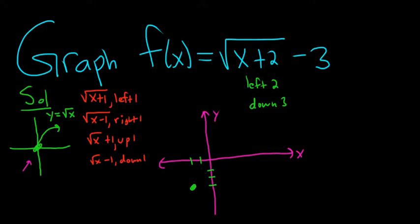We're going to cross the x and y-axis, so we should find the x and y-intercepts. Let's do the y-intercept first. To find the y-intercept, you always plug in 0 for x. So f of 0 equals the square root of 0 plus 2 minus 3. The square root of 2 is the square root of 2, so you get square root of 2 minus 3.